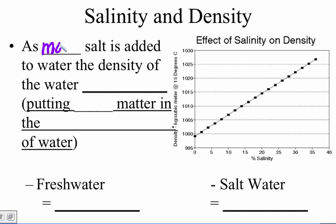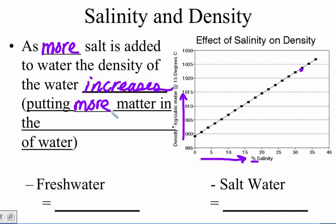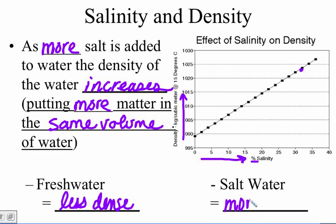When we add more salt to a material like water, what we notice is that the density increases. And we can see here on the graph that as we increase our percentage of salinity, we are also increasing our amount of density. So the more salt that is added, the higher the density is. And that's because we are putting more matter or more material into the same volume of water. We are putting in salt crystals to those water molecules adding to the density of the material. So when we look at the difference between fresh water and salt water, fresh water is going to be less dense because it's basically only the water molecules or the salt water we will see as more dense.